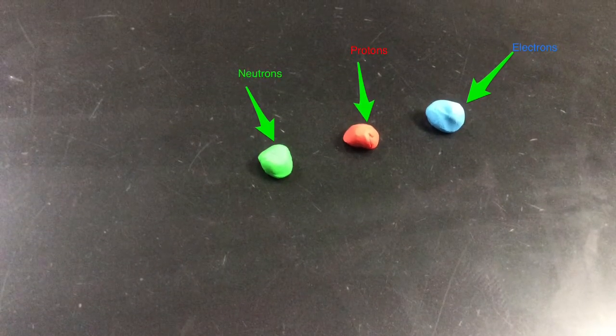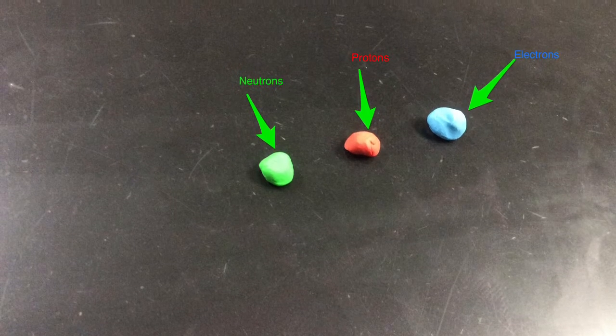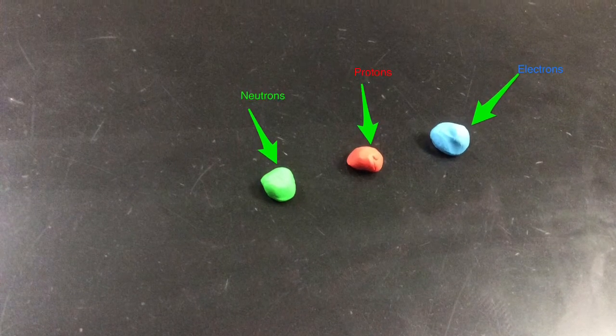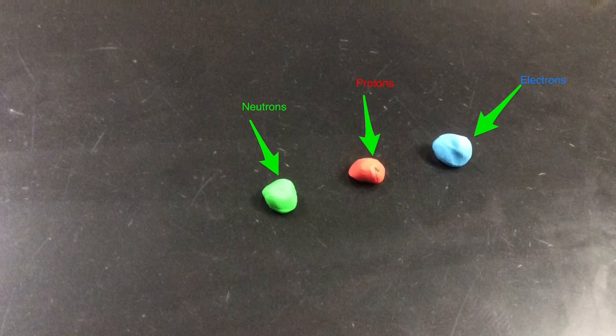Isotopes are atoms that have the same number of protons, but different numbers of neutrons. Because isotopes of an element have different numbers of neutrons, they also have different mass numbers.